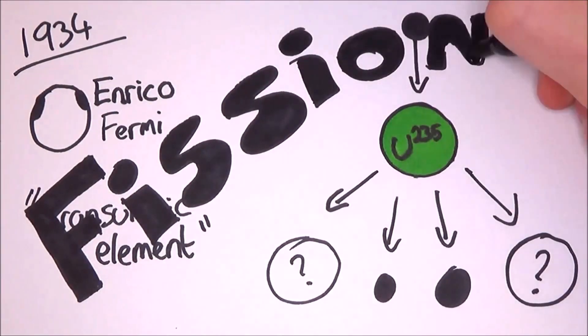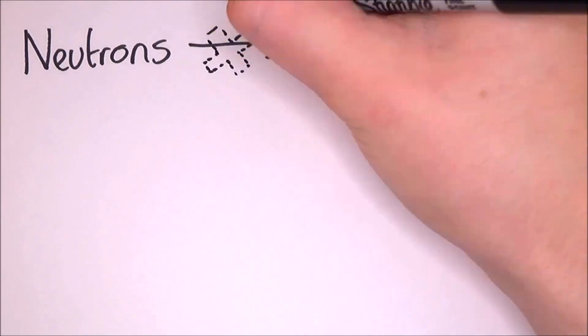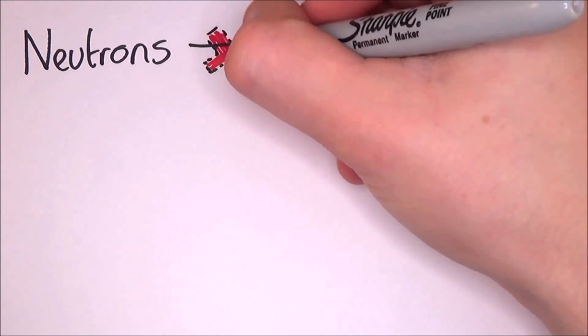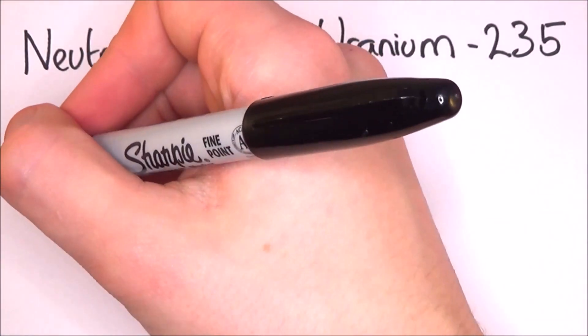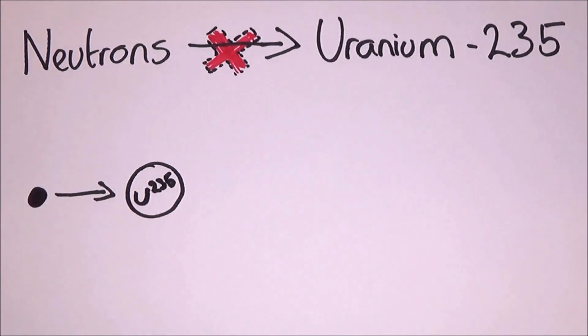You can actually get fission without neutron bombardment. It is rare, but it can still happen. It is known as spontaneous fission, but in the normal world with nuclear reactors, they use neutron bombardment. In a reaction, a subatomic particle, or a neutron, collides with an atom nucleus. Normally, uranium-235, which will decay naturally by emitting an alpha particle - that is, two neutrons and two protons.